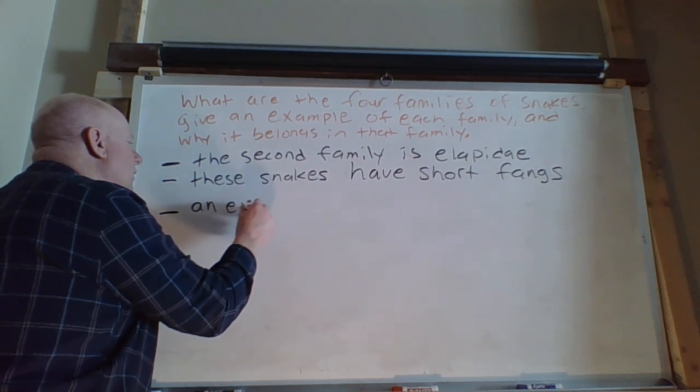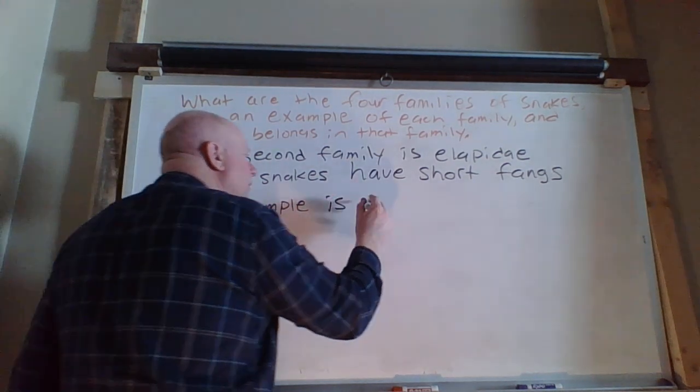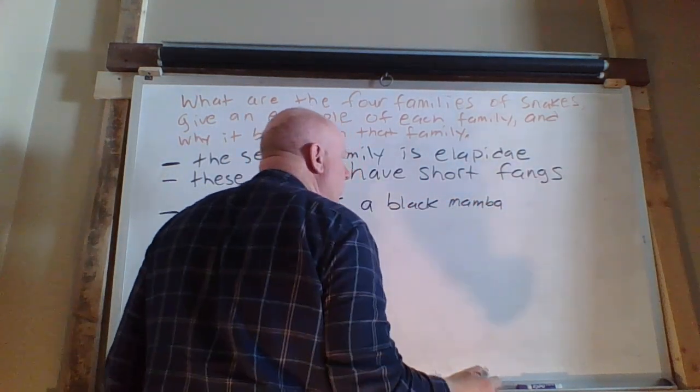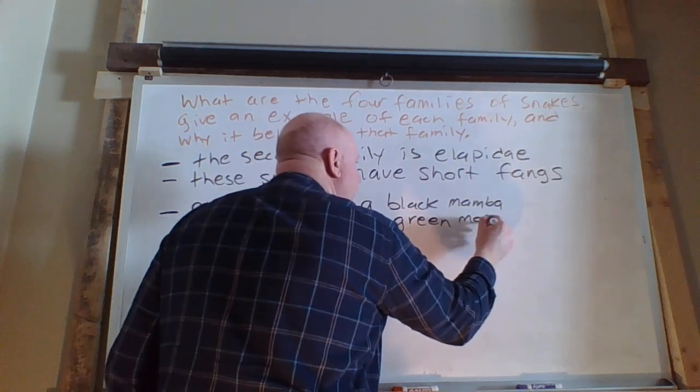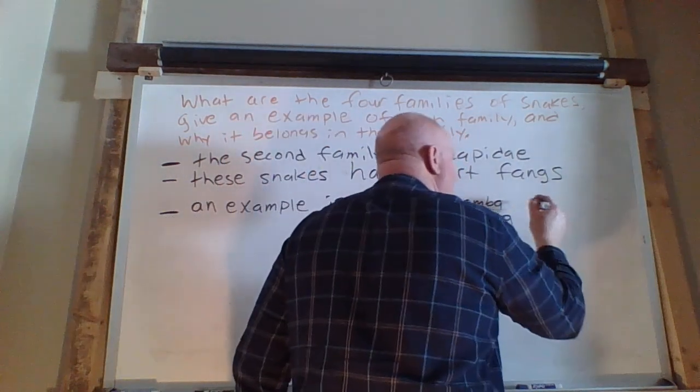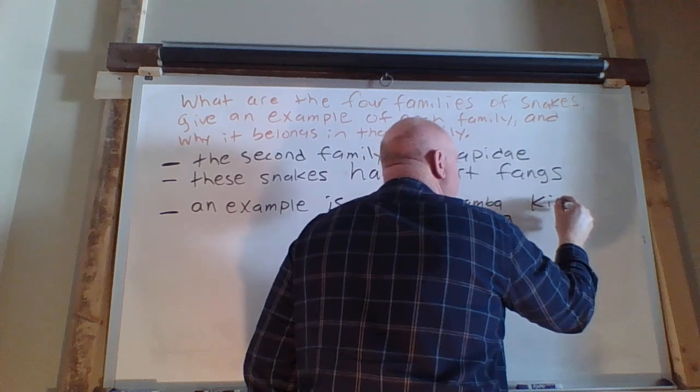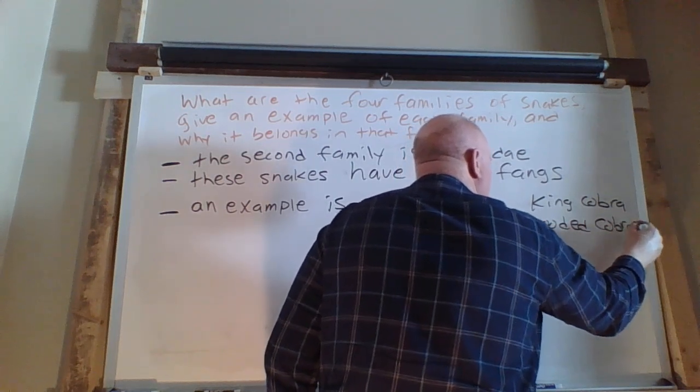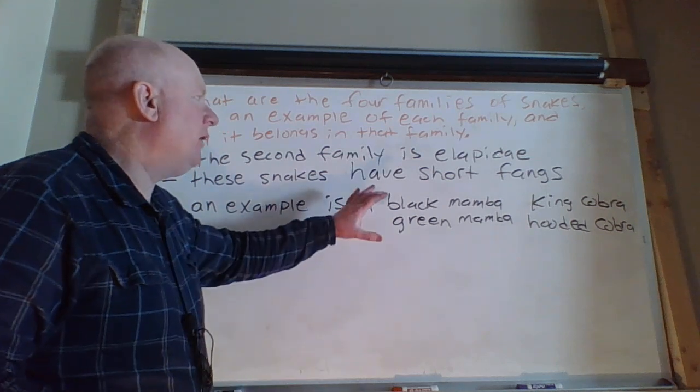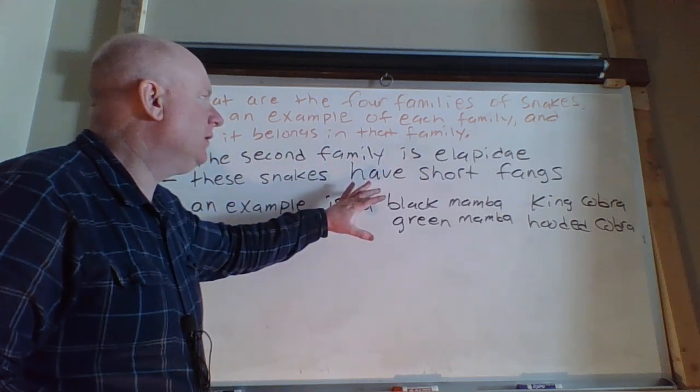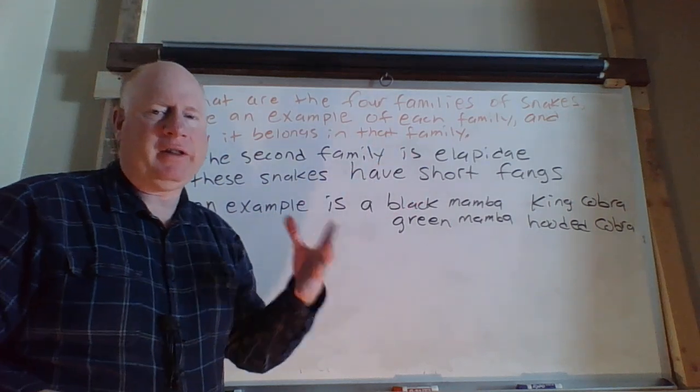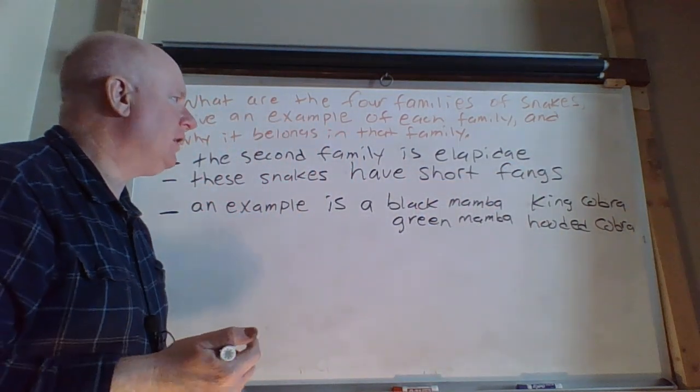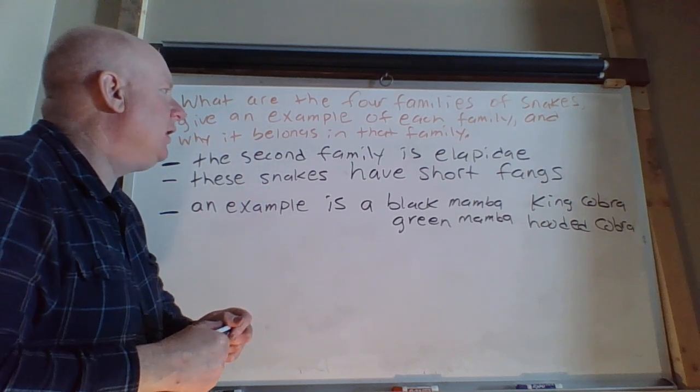An example is a black mamba. You could also say a green mamba, or the third one you could use is a king cobra, hooded cobra. Any one of those examples are snakes that have short erect fangs. They're venomous. We don't say that they are venomous because once we start talking about fangs, those two concepts would go hand in hand. So there's four examples you could use for that of family Elapidae.